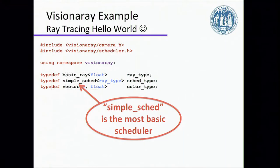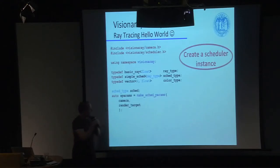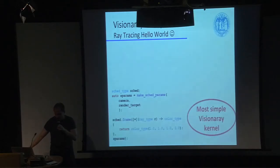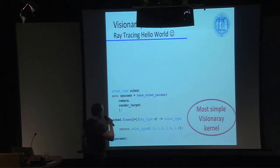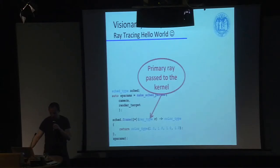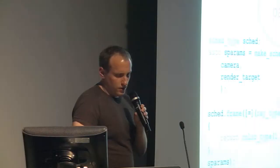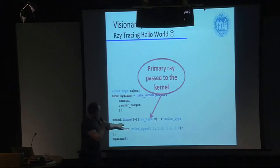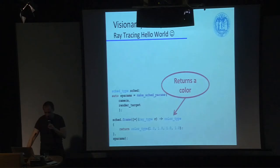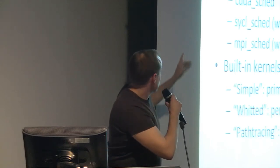SimpleScheduler is one of the schedulers — the most basic one you can imagine. It just traverses the image plane in scan lines. It is not parallelized, but this is great for debugging because there are no parallel threads involved. You create an instance of the scheduler by passing the virtual camera position and the render target. Then you write a simple ray tracing kernel — a C++ functional that receives the primary ray created by the scheduler and returns a color. This most basic kernel simply returns the color white.